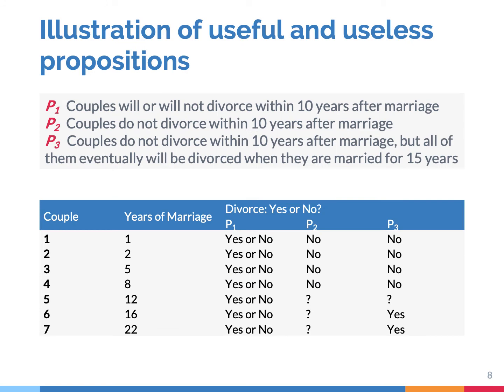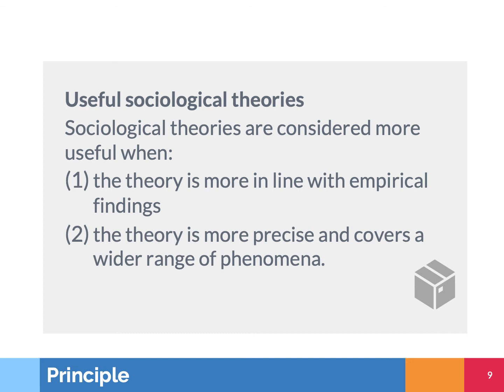Here you see how the three propositions lead to very different predictions and outcomes. P1 states that couples will or will not divorce within 10 years after marriage, and because it's a tautology, it will always be true — this is the least informative proposition. P2 states that couples do not divorce within 10 years after marriage; it's very precise, but the scope is restricted. P3 states that couples do not divorce within 10 years after marriage, but all of them eventually will be divorced when they are married for 15 years — that's very precise and has very broad scope, making it the most informative and most useful proposition. Useful sociological theories are therefore theories that are in line with reality and also informative, meaning they are very precise and cover a wider range of phenomena.